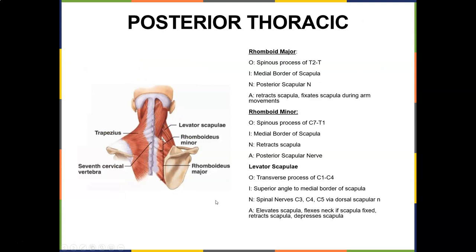The rhomboids and levator scapulae are the muscles that usually tend to get really tight, and students and patients will complain of neck pain and upper back pain. Rhomboid major originates on the spinous process of T2 to T5 and inserts on the medial border of the scapula. Nerve is the posterior scapular nerve, and the action is to retract and fixate the scapula during arm movements. Rhomboid minor originates from the spinous process of C7 to T1 and inserts on the medial border of the scapula. Its nerve supply is also the posterior scapular nerve, and its action is to retract the scapula.